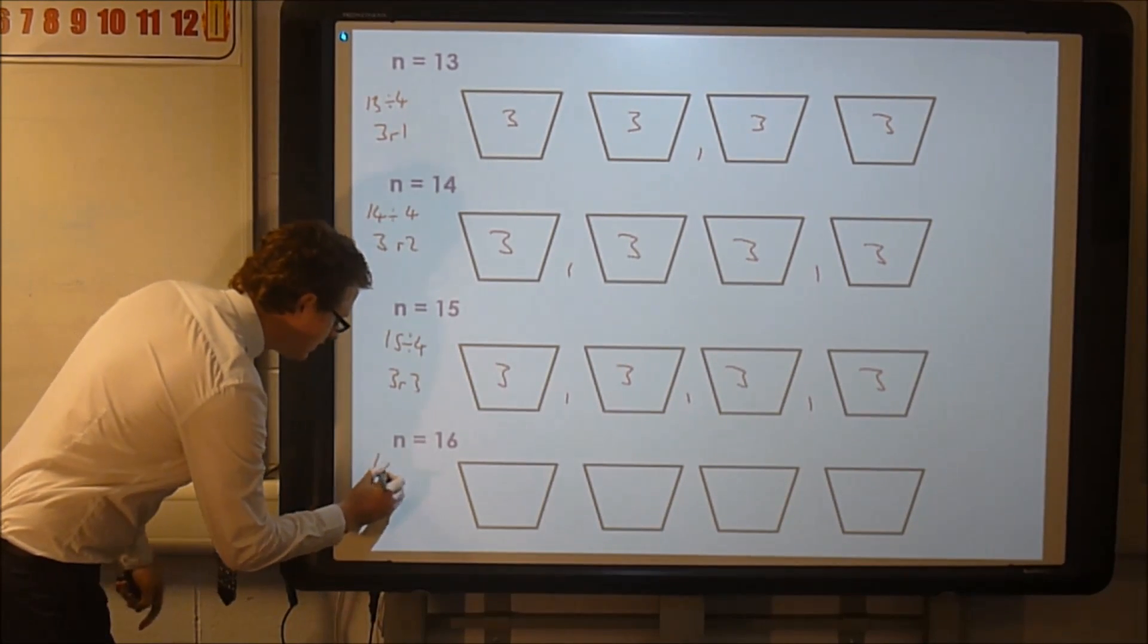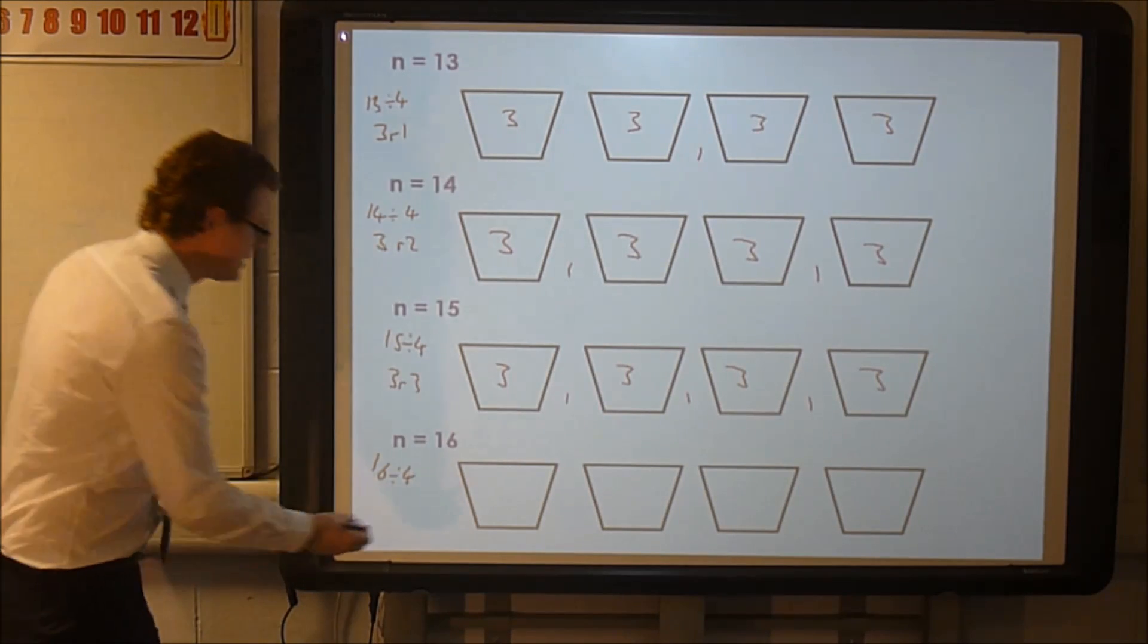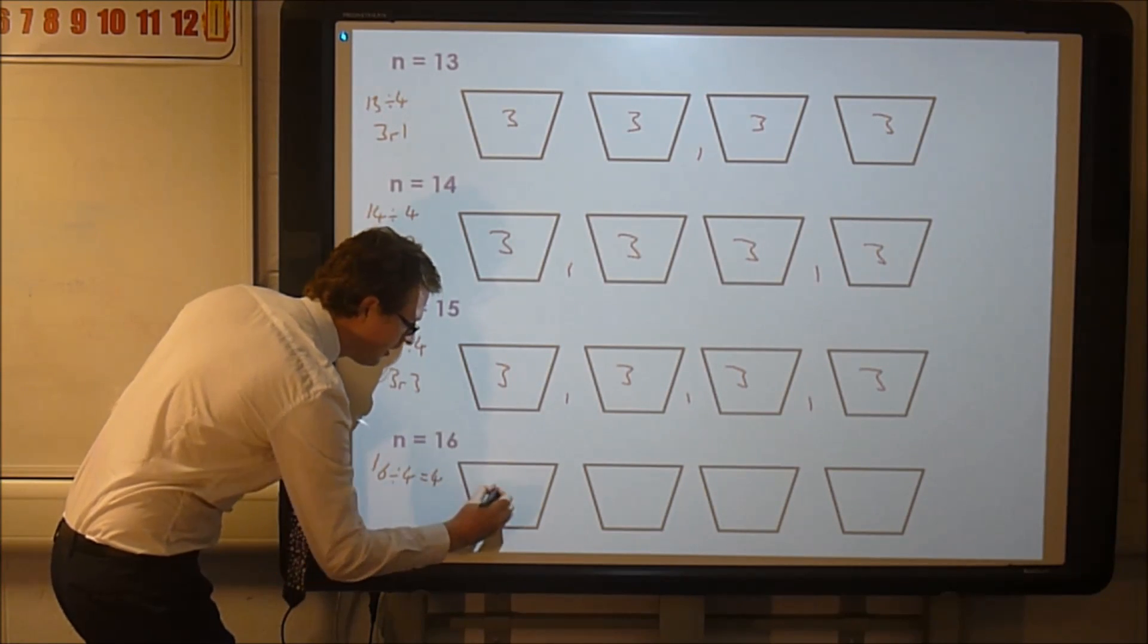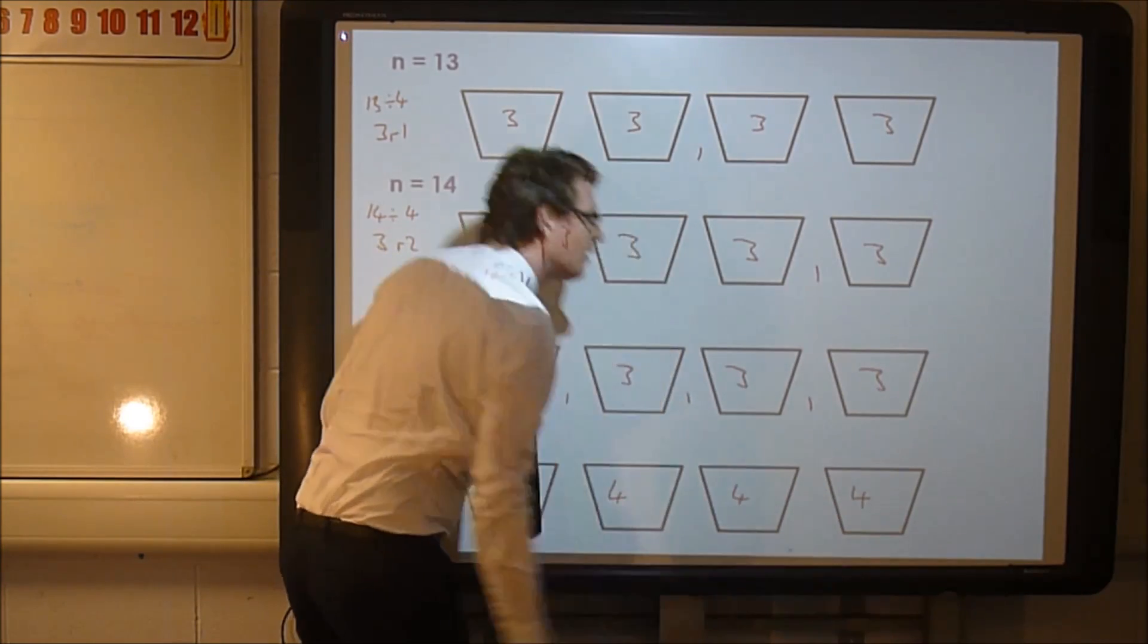And if n is 16, well 16 divided by four, that's nice and easy, because that's just four. So we say it's going to be four in each pot. Brilliant. Now let's have a look where the quartiles and the median are specifically for these ones.